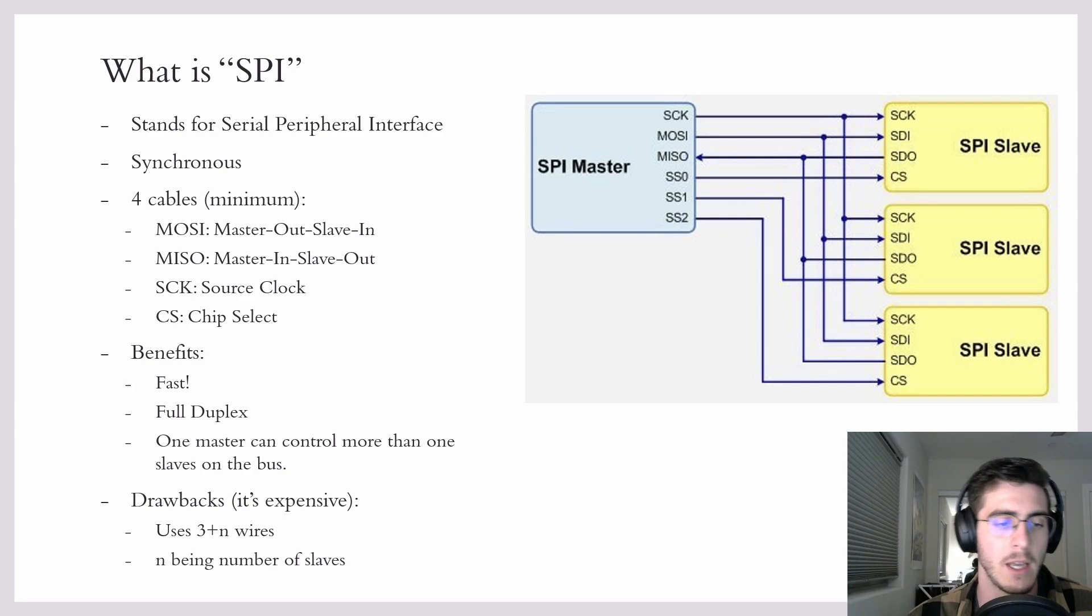So each slave will need its own chip select line, and that allows the master to select which device it wants to communicate with. So one of the drawbacks of SPI is exactly this chip select line.